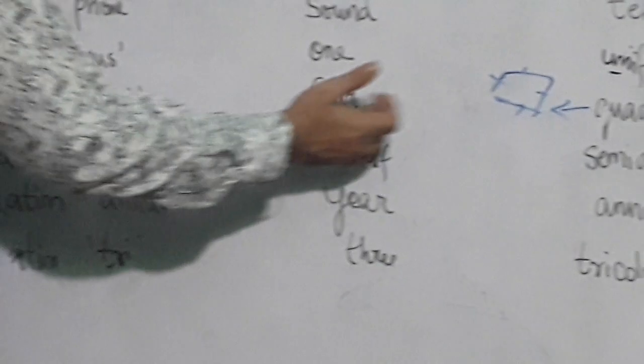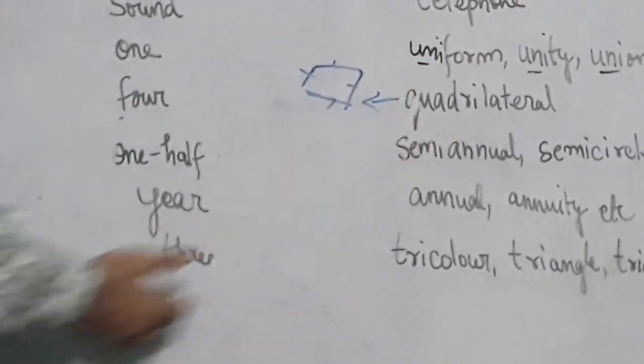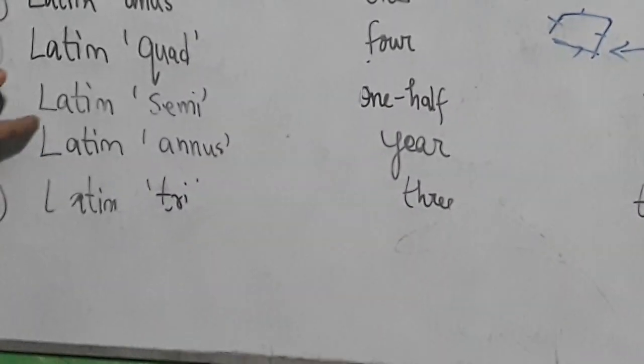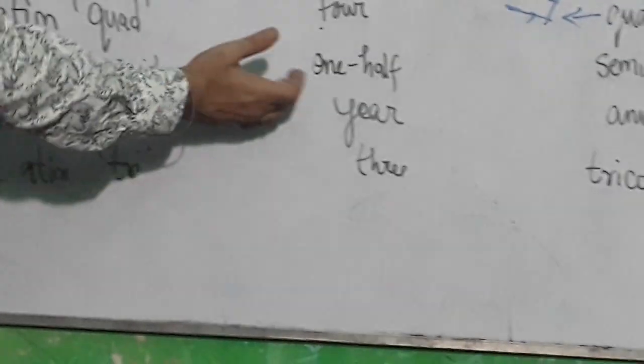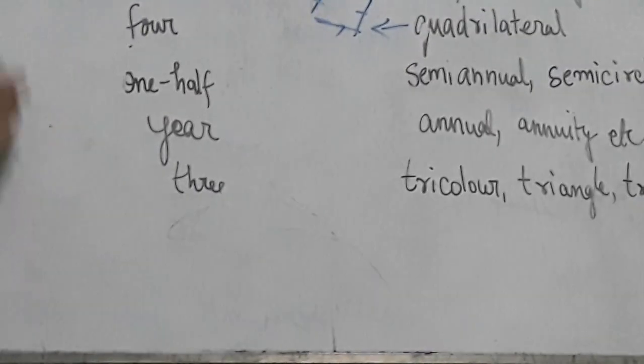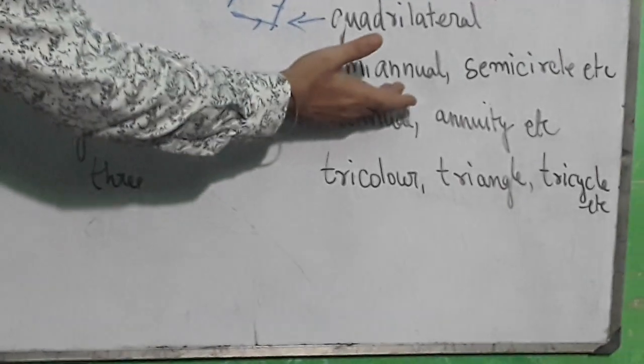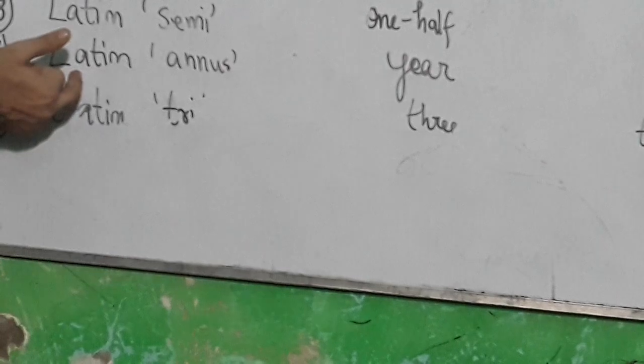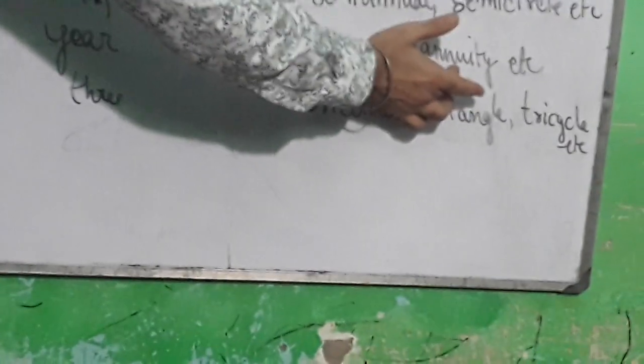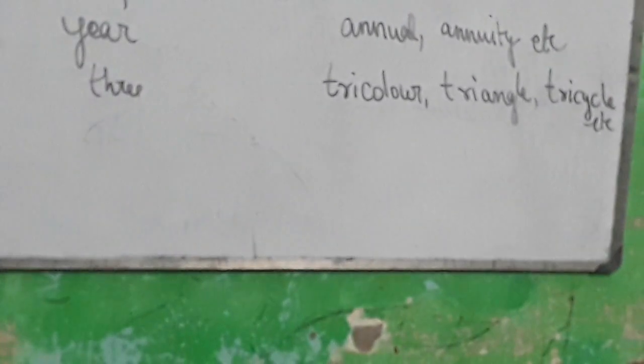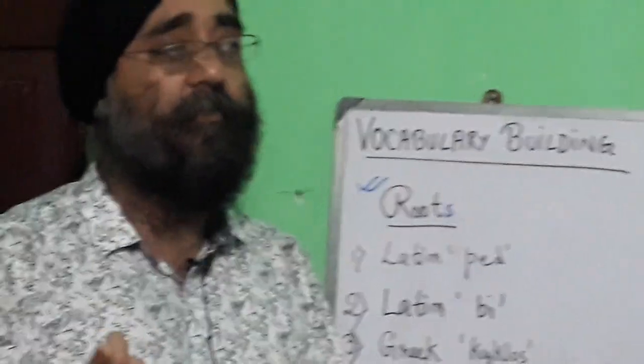Next we have Latin 'semi' meaning half or one-half, giving us semiannual and semicircle. You can make many more words like this. Latin 'annus' means year, and we have annual. And Latin 'tri' means three, giving us tricolor and triangle. I have given you the etymology and few sentences.